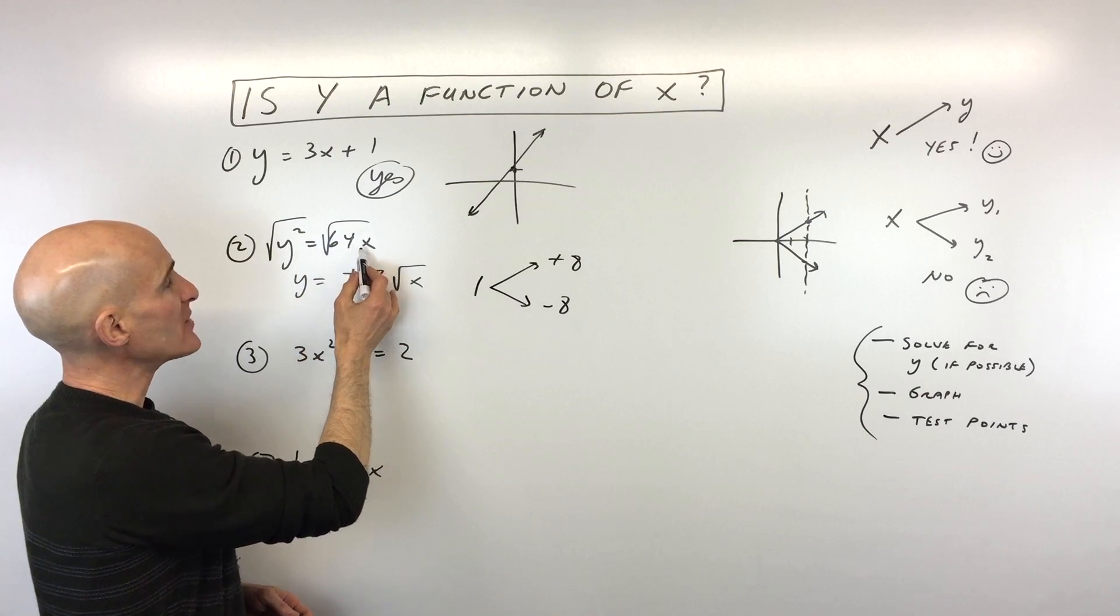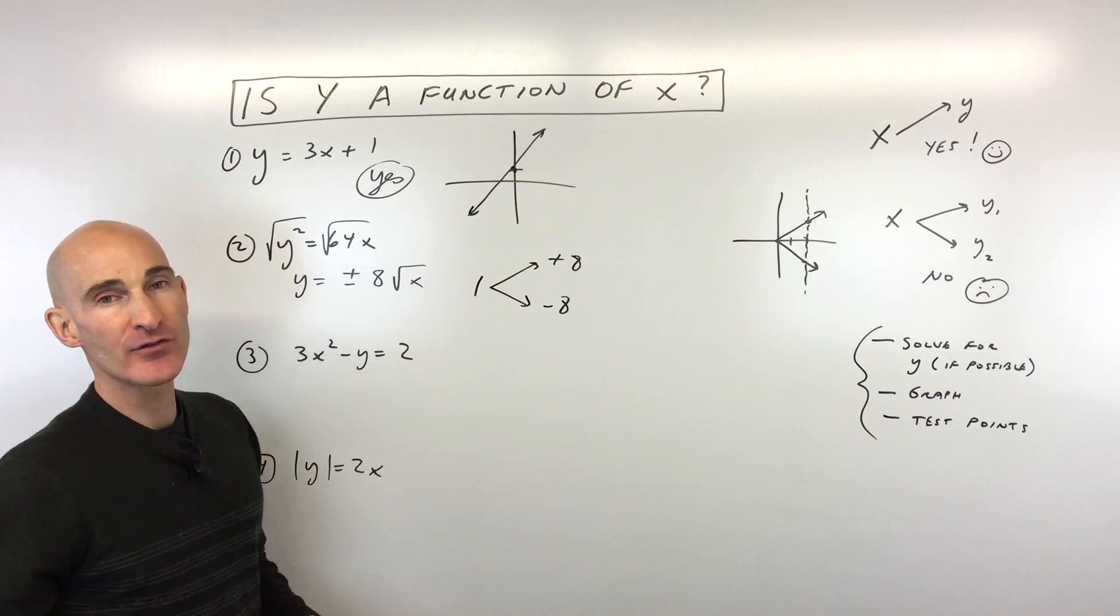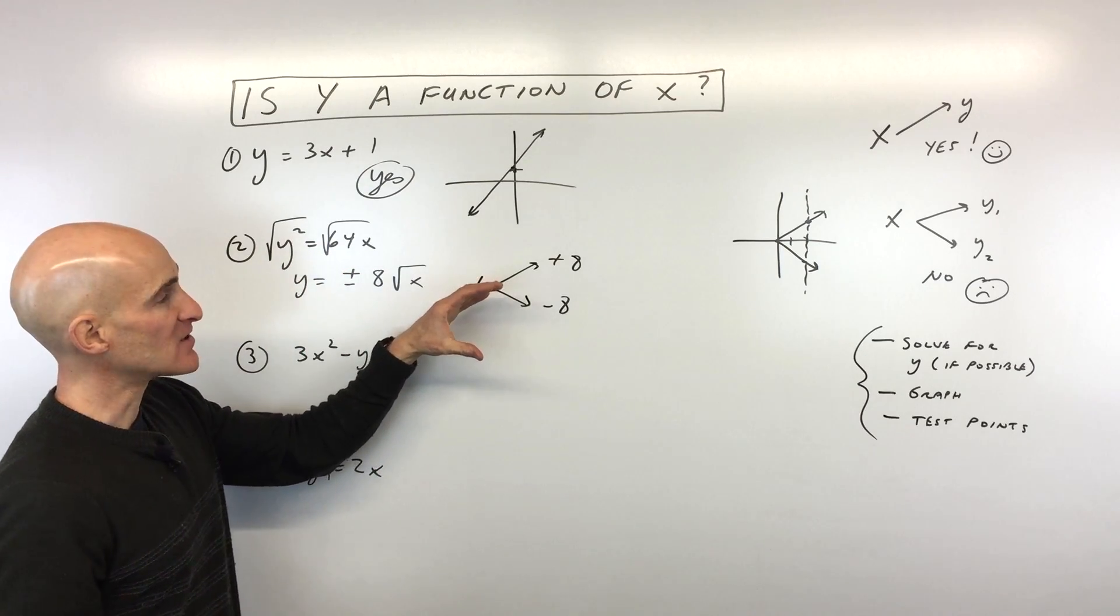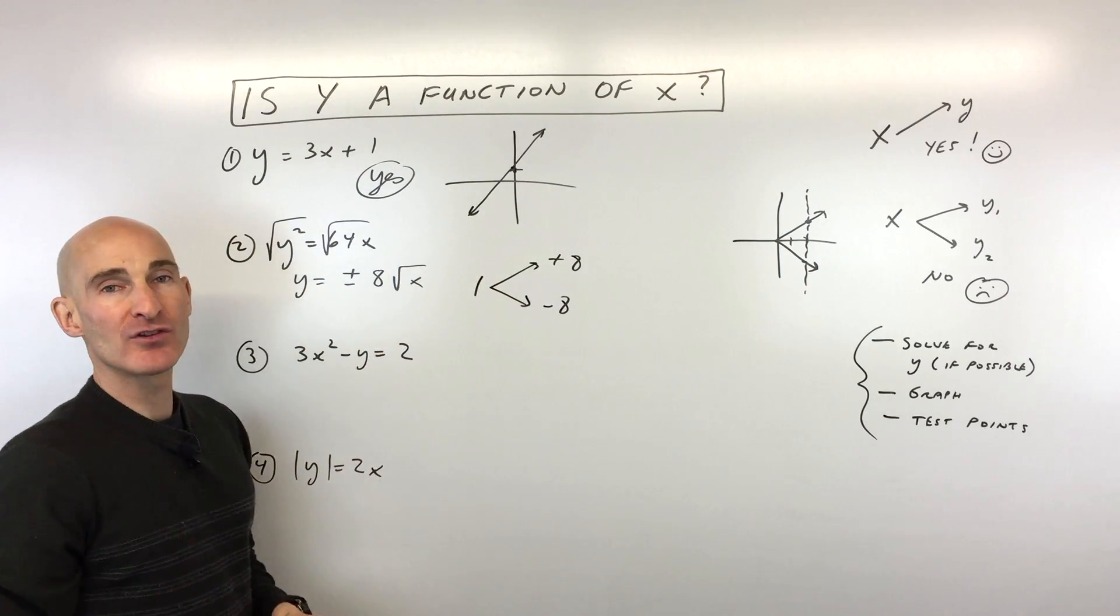The other thing we can do is graph this, and we'll see that it fails that vertical line test. This is actually a parabola that's on its side like so, and so it's failing that vertical line test.